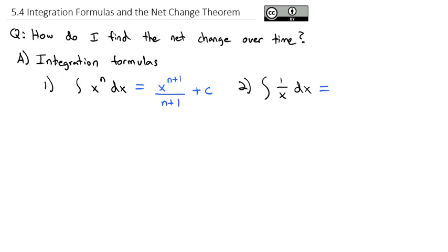What's nice is the integral is the inverse of the derivative. So we just have to ask ourselves: is there a derivative that equals 1 over x? We should remember that the derivative of the natural log of x is 1 over x. So the integral of 1 over x is the natural log of x plus C.